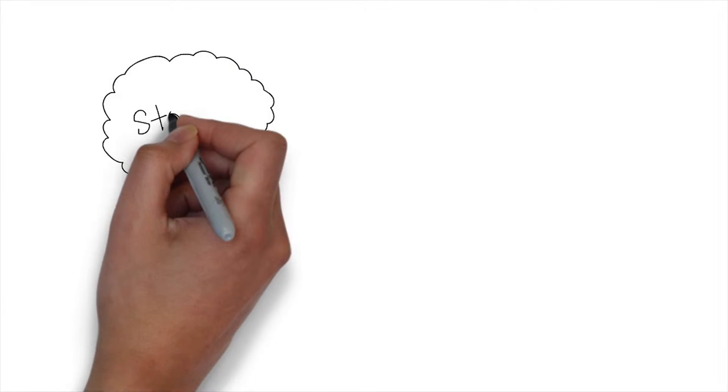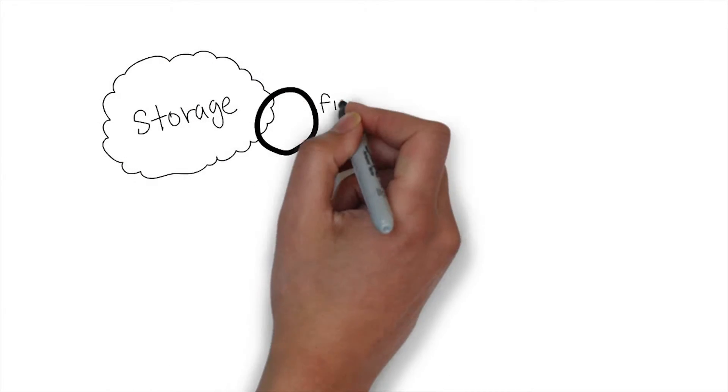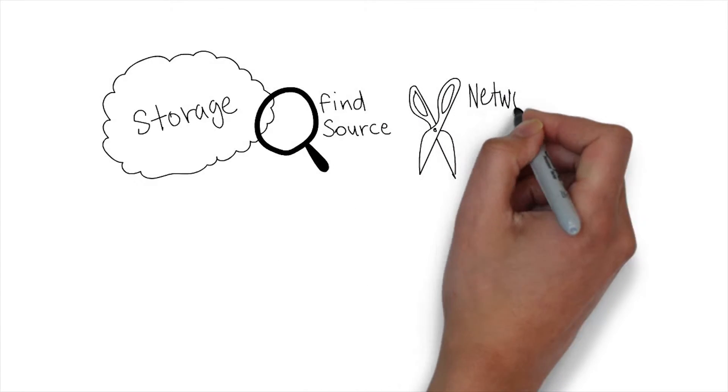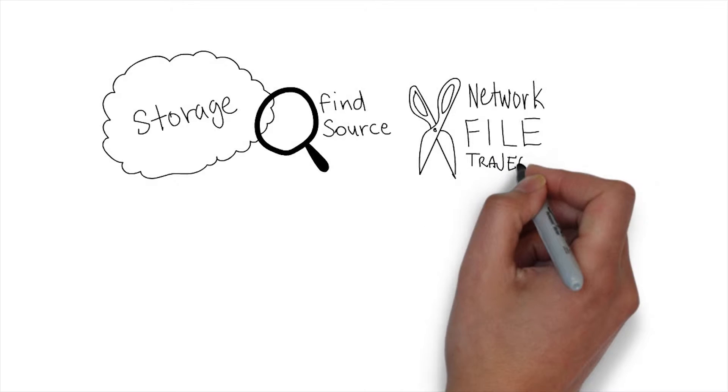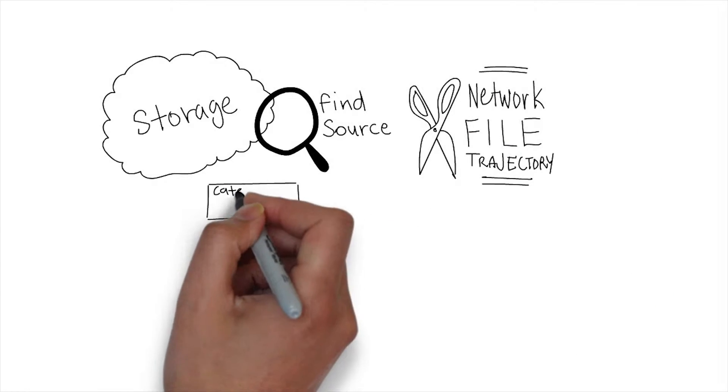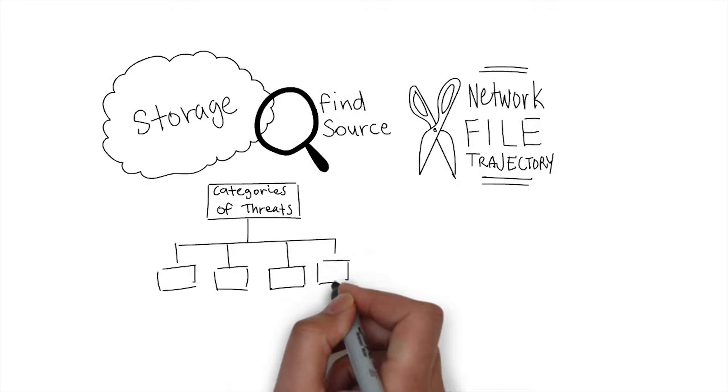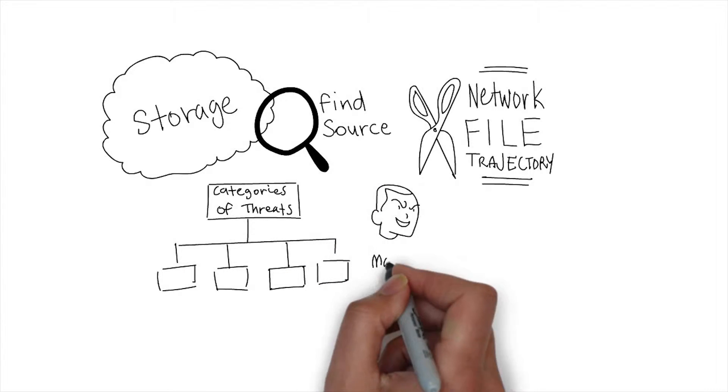This is being stored somewhere else. Now we need to actually find the actual source of that file and cut it off, and that's where network file trajectory comes from. I like to say indicators of compromise give you a hand to say hey, these are the type of categories that are occurring, these are things that I need to be aware of on my network.